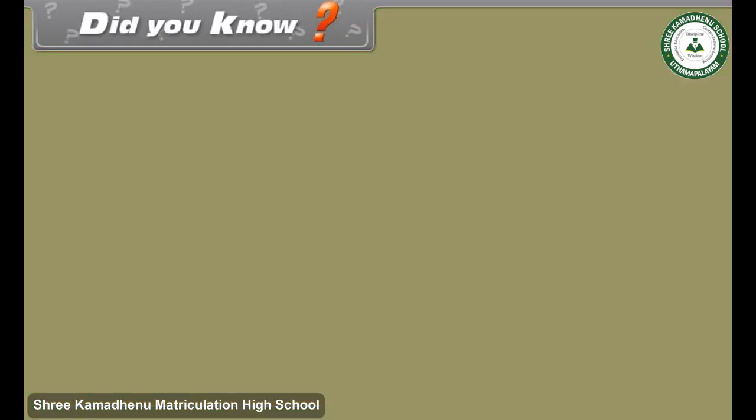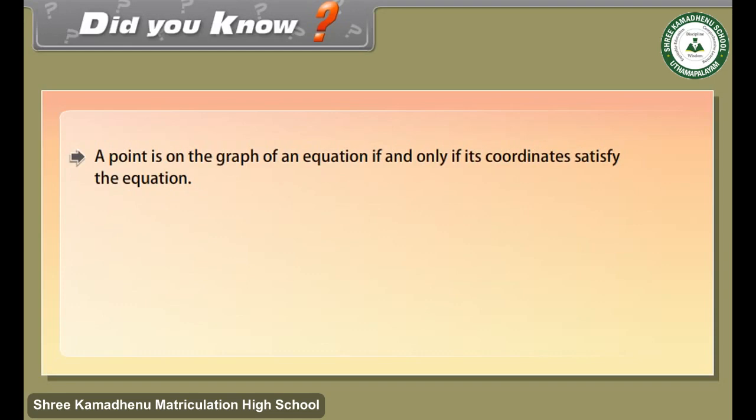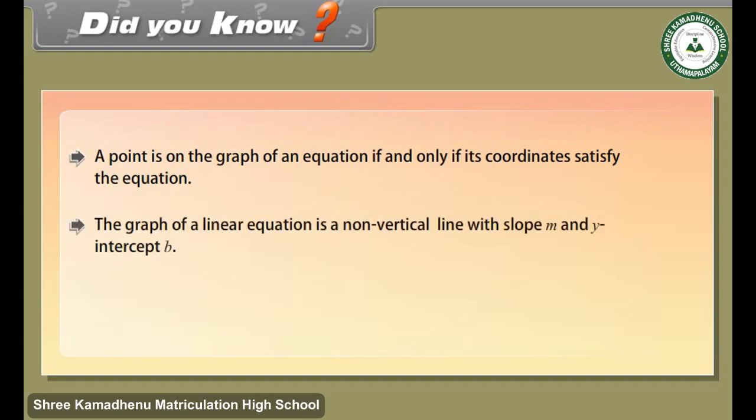Did you know? A point is on the graph of an equation if and only if its coordinates satisfy the equation. The graph of a linear equation is a non-vertical line with slope m and y-intercept b.